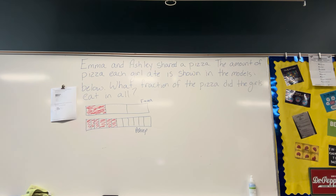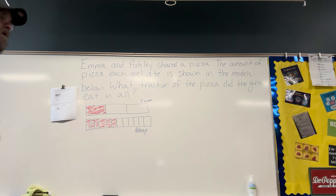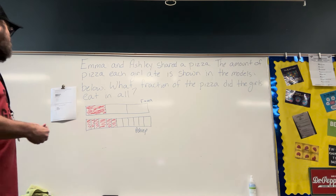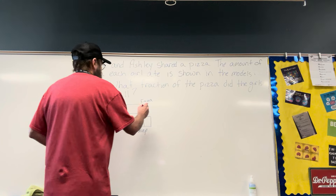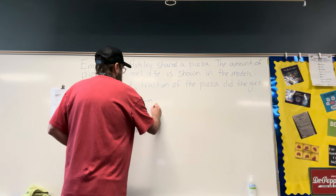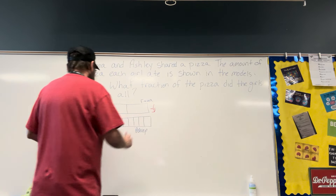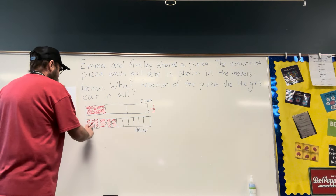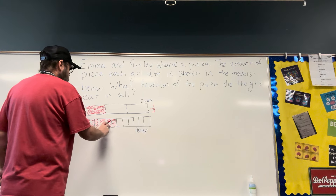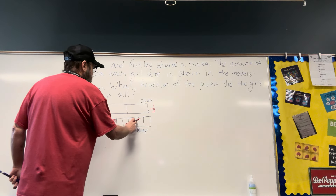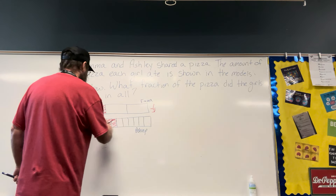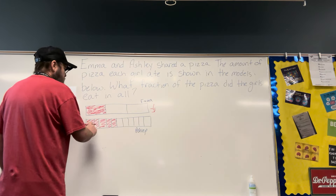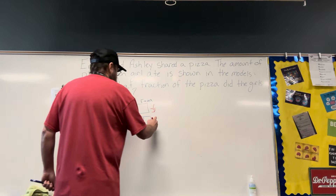Let's figure out how much pizza each person ate first. We know that Emma ate one-third of the pizza. And counting the pieces: one, two, three, four, five, six, seven, eight, nine, ten, eleven, twelve. So there's twelve pieces here.